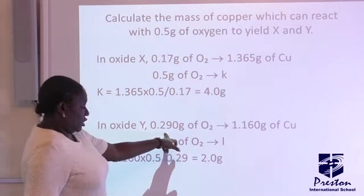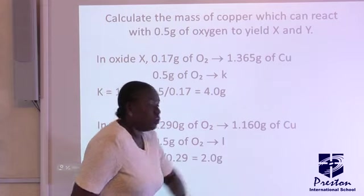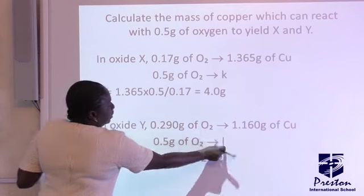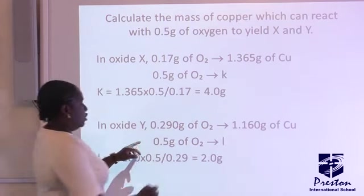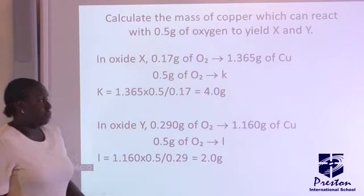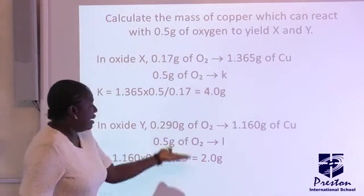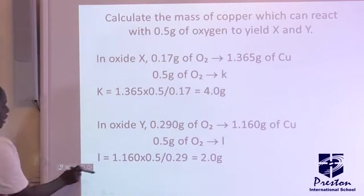Doing the same for Oxide Y. This is the grams of oxygen from our previous calculation, 0.290 grams reacting with 1.160 grams of copper. Now, you bring 0.5 here, and you make this the unknown. Let's make this I. Now, making the I the subject of the formula, you cross multiply. Then, you're going to have this value, which is 2.0 grams. Now, our values now, from this calculation, you can see we have multiple ratio. So, that leads us to the next question.